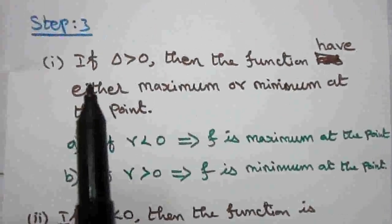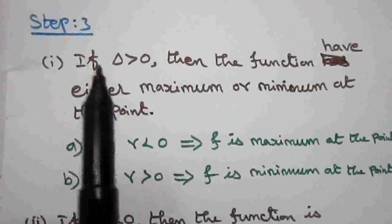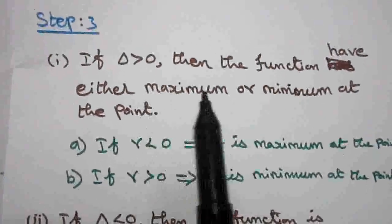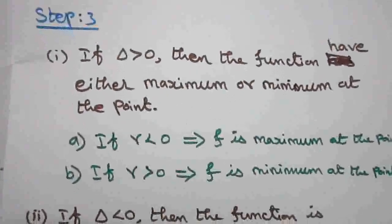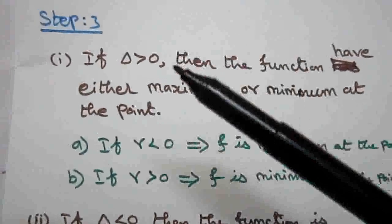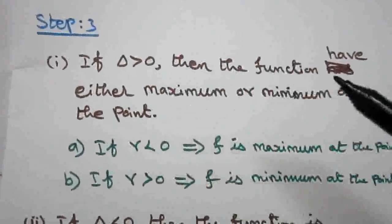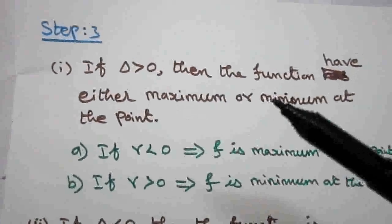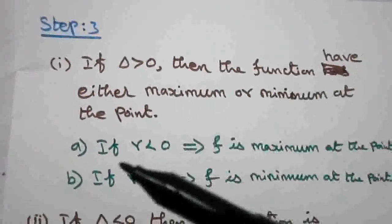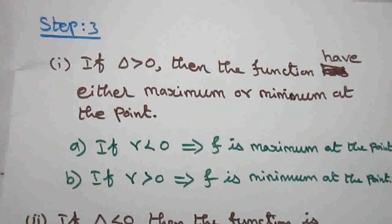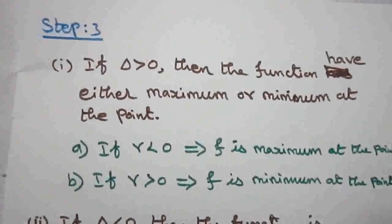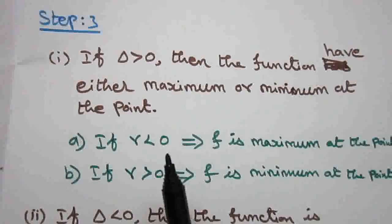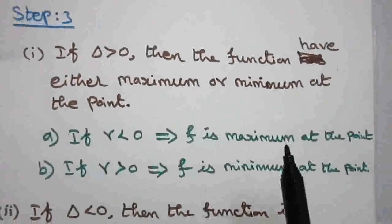Step three: after obtaining delta, if delta is greater than zero then the function has either maxima or minima at that point. However, we cannot say which one — it is based on the value of r. If r is less than zero, then f is maximum at the point.